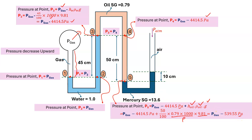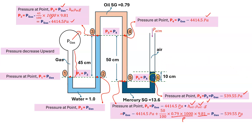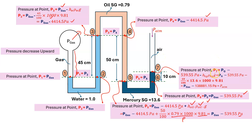Drawing another horizontal line at the mercury-oil interface, pressure is the same for the same fluid, so P6 = P5 = P_gas minus 539.55 Pa. Going upward through mercury, pressure decreases. P7 = P6 minus h_Hg × rho_Hg × g. The mercury height is 10 centimeters, specific gravity 13.6, so: P7 = P_gas minus 539.55 minus (0.10 × 13600 × 9.8) = P_gas minus 138881.15 Pa.